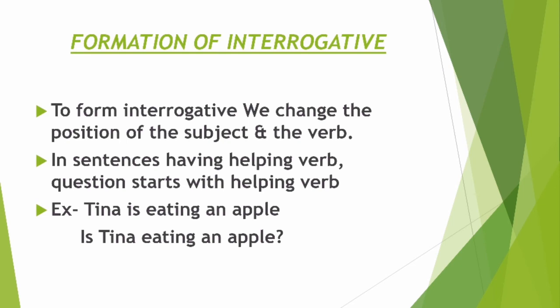Now how to form interrogative sentences? To form interrogative, we change the position of subject and verb. In sentences having a helping verb, the question starts with the helping verb. Like 'Tina is eating an apple.' Here 'Tina' is the subject and 'is' is the helping verb. We change their positions: 'Is Tina eating an apple?' Helping verb comes first, then subject, then rest of the sentence, and a question mark at the end.